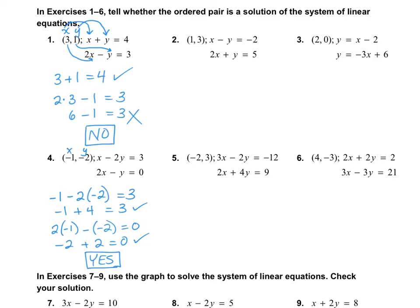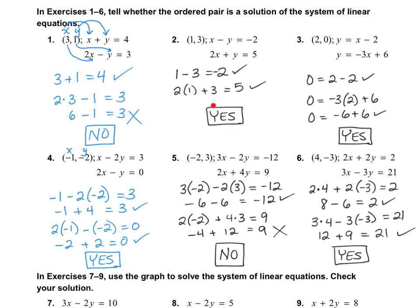I would like for you to go ahead and do 2, 3, 5, and 6 on your own. For number 2, I got yes. For number 3, I also got yes. For number 5, it's no. And number 6 is yes. If you did not get it correct, please pause the video and see if you can find your mistakes.